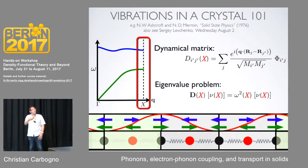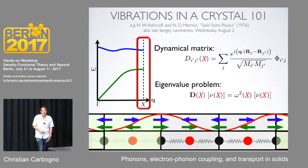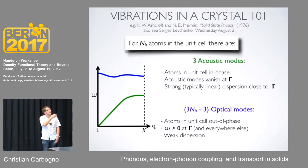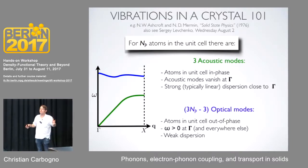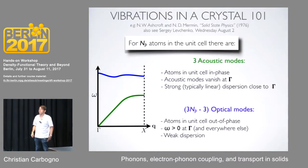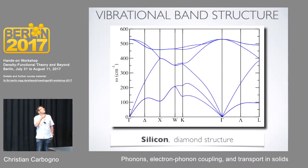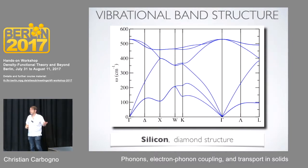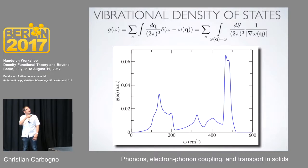The same applies for the optical mode — there too you have a switch in phase, but these are still very similar motions, so the actual dispersion — the change in frequency going across the Brillouin zone — is not that dramatic. In a real crystal, you will always get three acoustic modes corresponding to the three different translations in different Cartesian directions, and then 3N-3 optical modes. Just to give an example, this is the vibrational band structure of silicon, which you will calculate this afternoon.